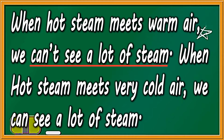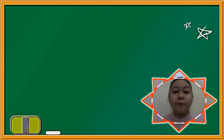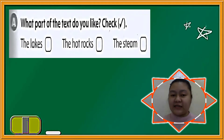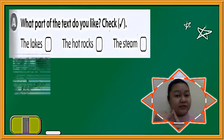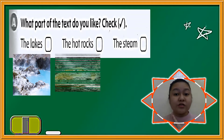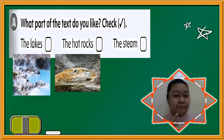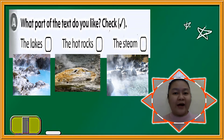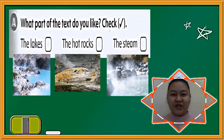When hot steam meets very cold air, we can also see a lot of steam. Now, on page 23 of your workbook, what part of the text do you like? Check. Is it the lakes? The hot rocks? Or the steam? Choose only one and put a check on it.